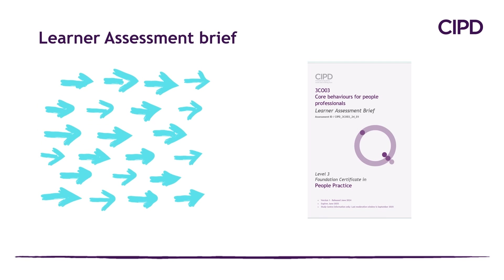The learner assessment brief we are concerned with here has been written specifically to enable students to achieve all the assessment criteria within unit 3CO03. As assessment briefs are updated regularly, this particular brief is the one issued in June 2024 and therefore has the assessment ID CIPD 3003-2401, meaning it's the first assessment brief issued in 2024.